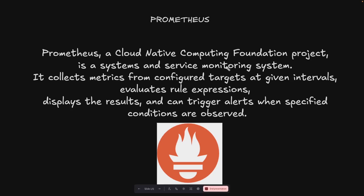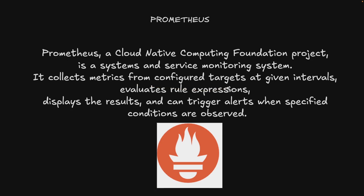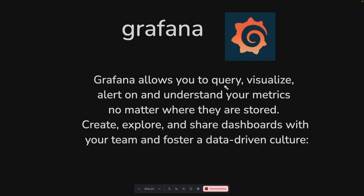Let's talk about the definitions. Prometheus is a Cloud Native Computing Foundation project. What it does is collect metrics from configured targets at a given interval, evaluate rule expressions, and display the results. It can trigger alerts when specified conditions are observed, so it can also be used as an alert manager. The configured targets can be your services, deployment servers, or containers — these are your target servers from where it collects the metrics.